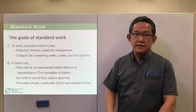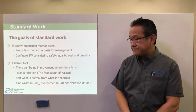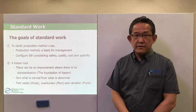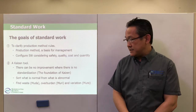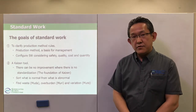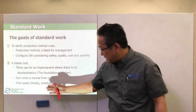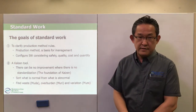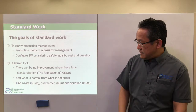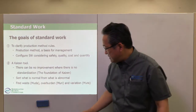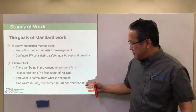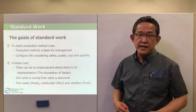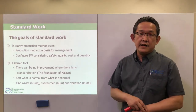The second purpose is to use standard work as a tool for kaizen. There is a saying: where there is no standard, there can be no kaizen. With a standard, you can judge whether the work is normal or abnormal. In addition, it is possible to identify opportunities for improvement such as muda, waste, overburden, and unevenness, and link them to kaizen activities.